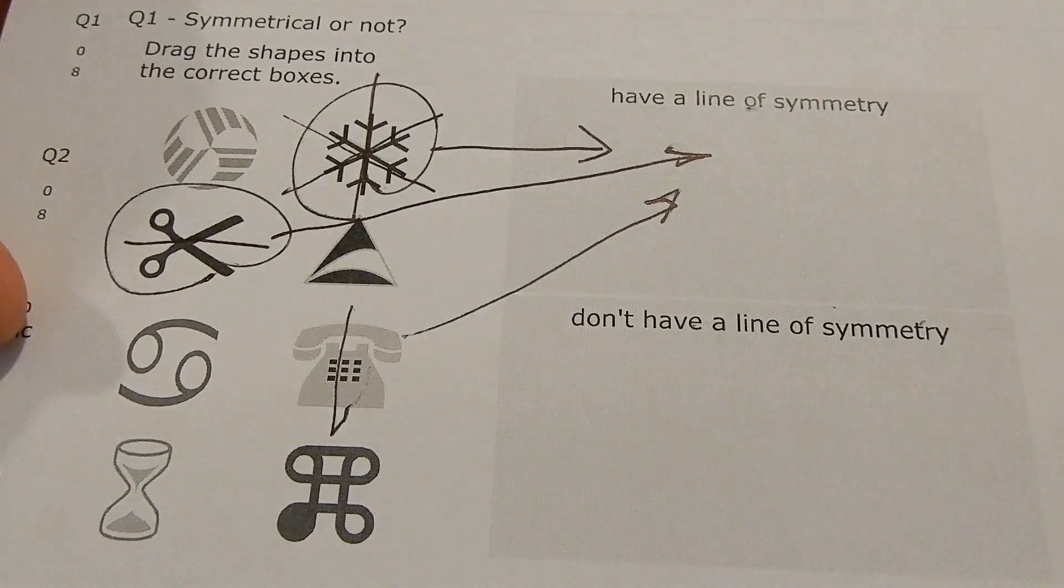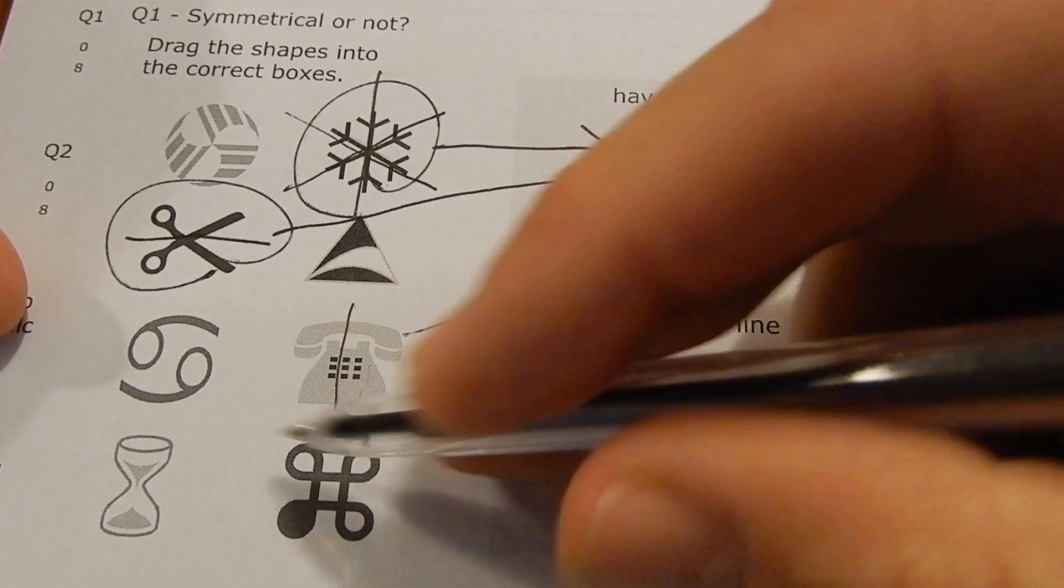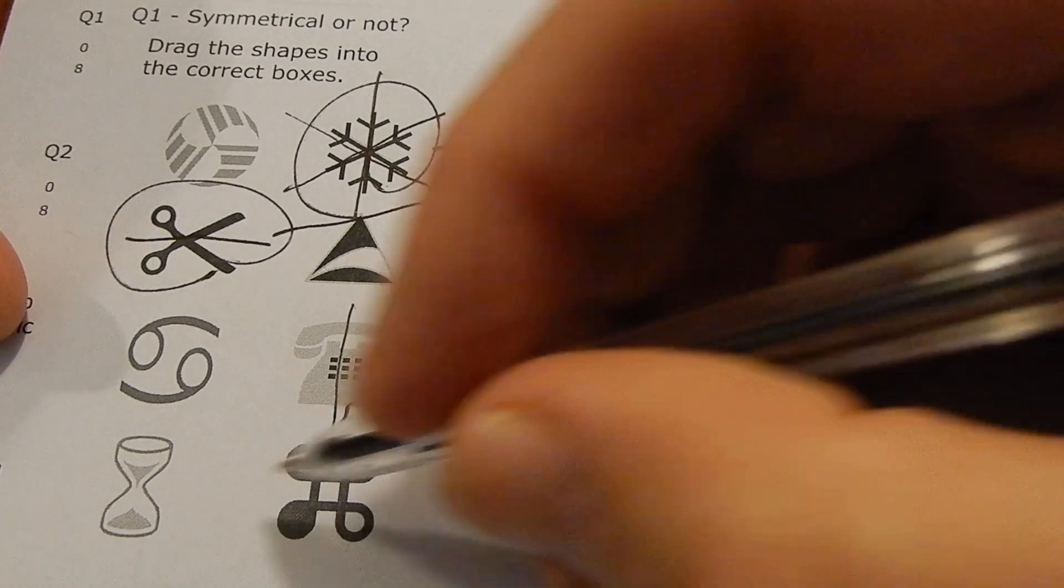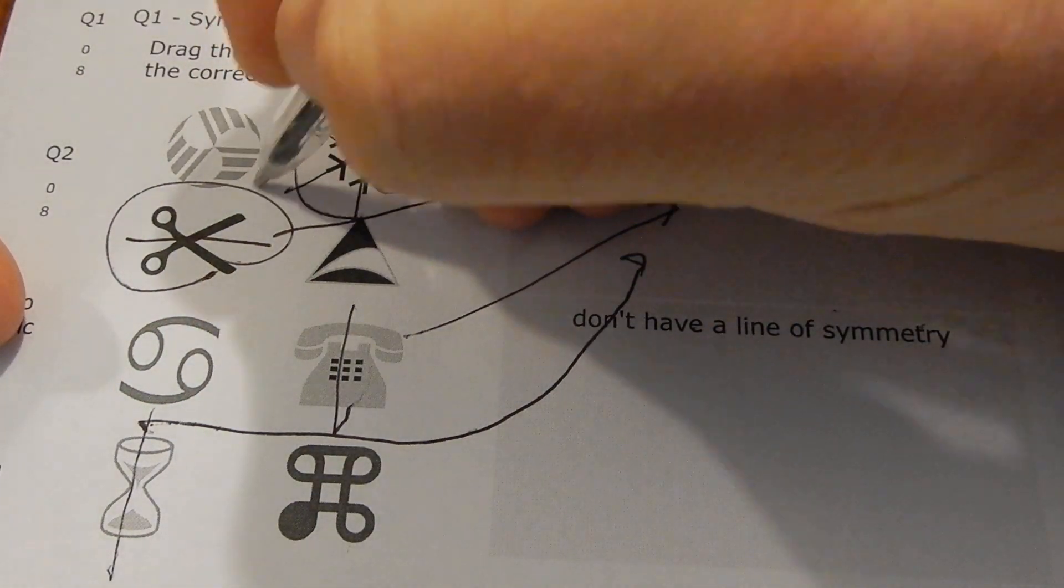got a line of symmetry, line of symmetry, line of symmetry. And you know it's not got a line at all. The hourglass has got a line, or the minute timer has got a line of symmetry. Ones without lines of symmetry...